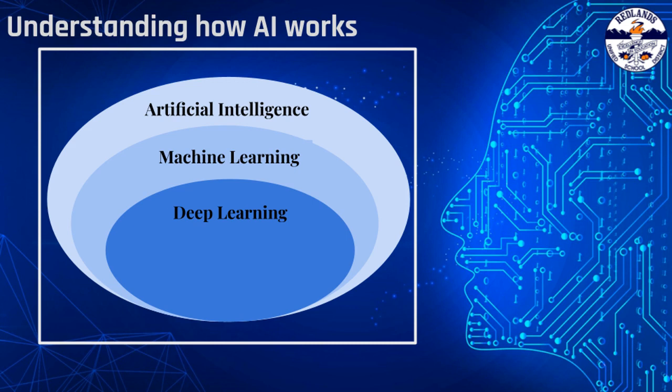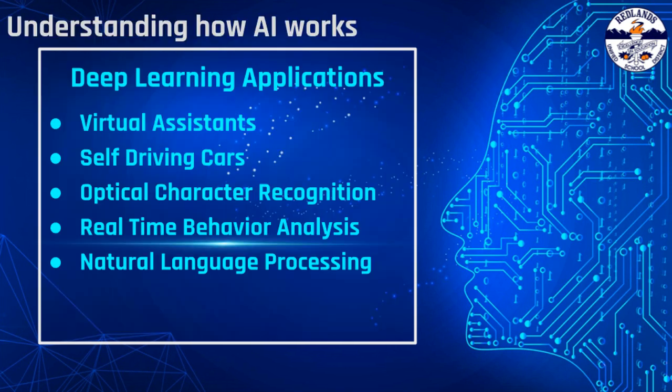We also learned that deep learning is a subset of machine learning that uses artificial neural networks to solve complex problems. Some popular applications include image and speech recognition, self-driving cars, and natural language processing systems like Apple's Siri and Amazon's Alexa.